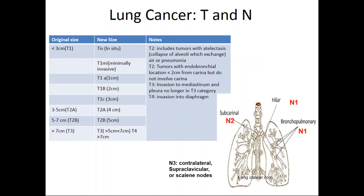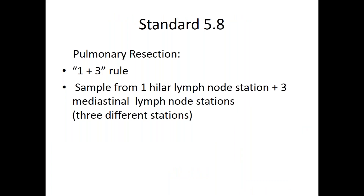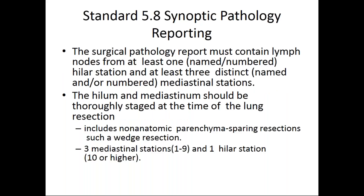Here is a summary of the TNM stages for reference. Looking at the nodal basins, N1 are the more peripheral nodes, N2 are the subcarinal nodes, and N3 is the contralateral, supraclavicular, or scalene nodes. The resection follows a one-plus-three rule for Standard 5.8: the goal is to sample from one hilar node station and three mediastinal lymph node stations. The pathology report must contain lymph nodes from the hilar station and three distinct mediastinal stations.